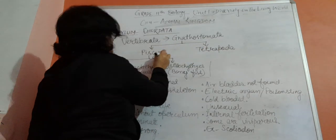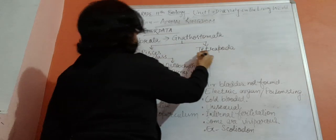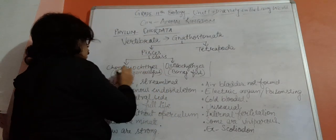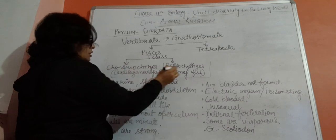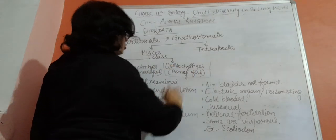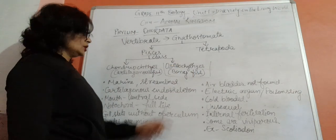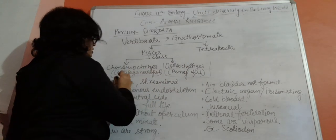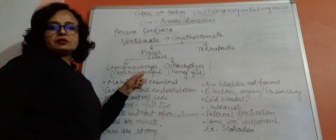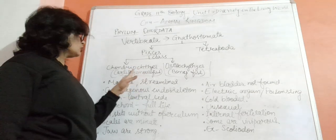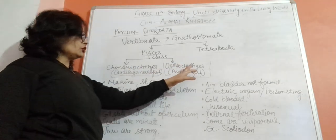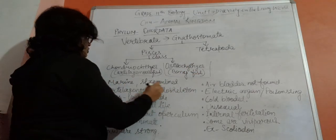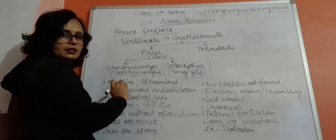Pisces is further divided into two types: Chondrichthyes and Osteichthyes. Chondrichthyes are cartilaginous fish - the fishes which have cartilage, not bones. Osteichthyes are the bony fishes. Chondrichthyes are marine with streamlined bodies and cartilaginous endoskeletons.